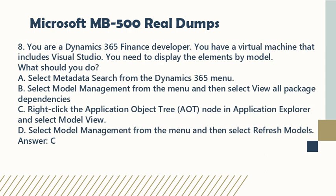Question 8. You are a Dynamics 365 Finance developer. You have a virtual machine that includes Visual Studio. You need to display the elements by model. What should you do? A. Select metadata search from the Dynamics 365 menu. B. Select model management from the menu and then select View all package dependencies. C. Right-click the application object tree (AOT) node in Application Explorer and select Model view. D. Select model management from the menu and then select Refresh models. Answer: C.